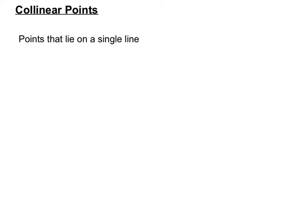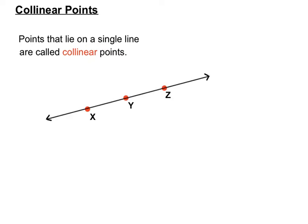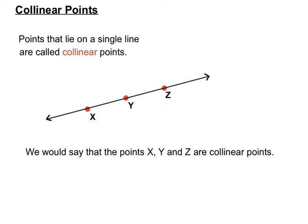Collinear points. You can see the word line in the word collinear, so it's got something to do with a line and points. Points that lie on a single line can be called collinear points. So if X, Y and Z are all individual points but they all happen to lie on the same line, then we can call those points X, Y and Z collinear points.